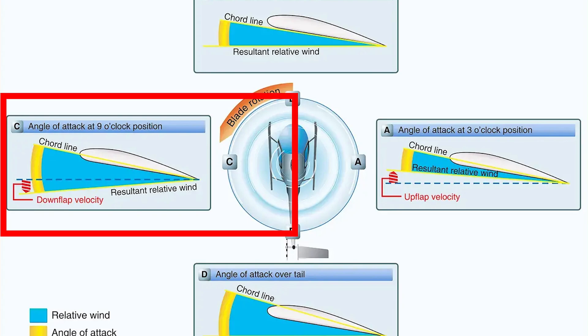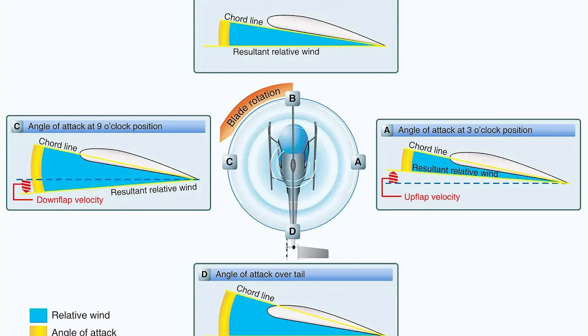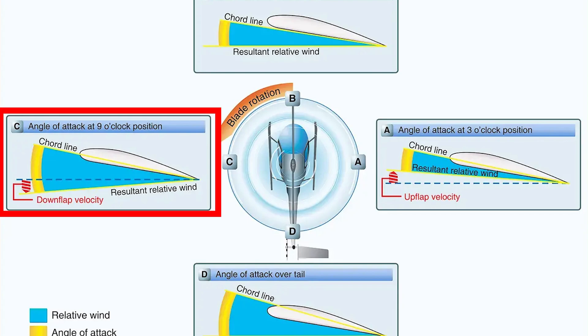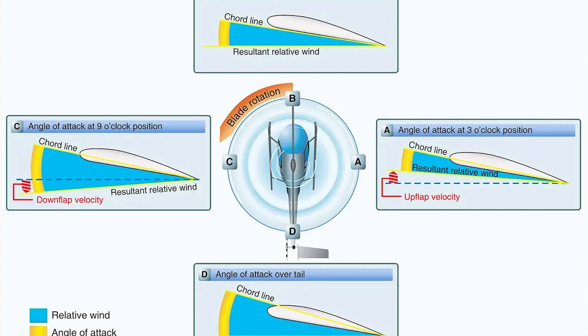On the other side, the retreating blade moves away from the airflow, experiencing less relative wind speed, and generates less lift. To compensate, the retreating blade flaps downward. As it flaps down, the angle of attack actually increases, generating more lift to balance the forces across the rotor disc.